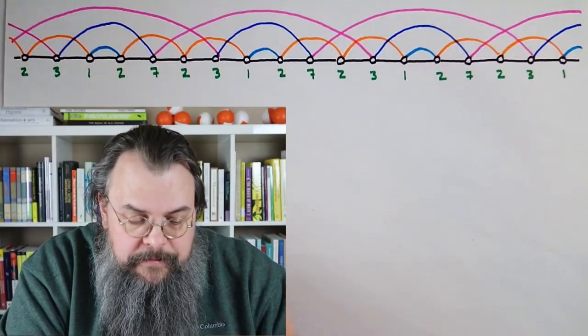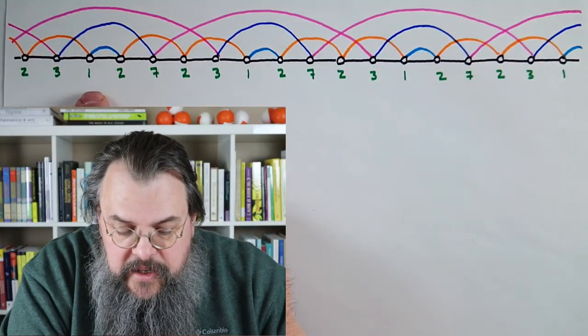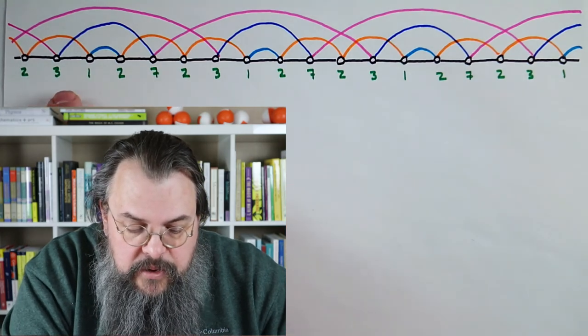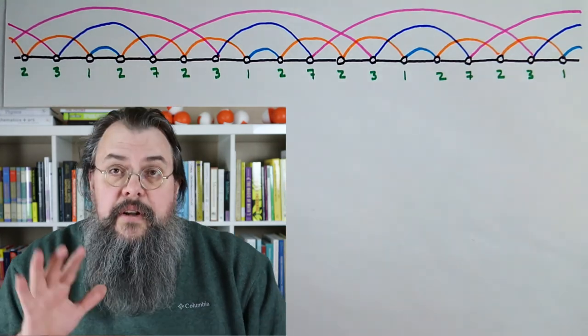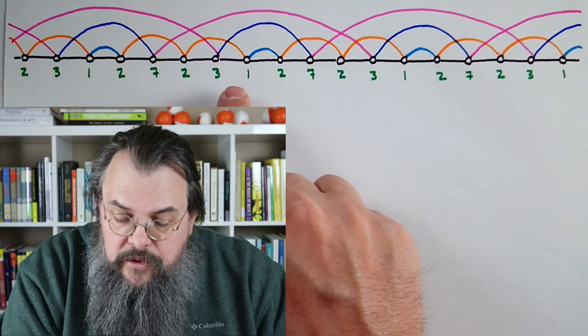Here's a juggling pattern. The siteswap is 2, 3, 1, 2, 7. So it's period 5, and it repeats.